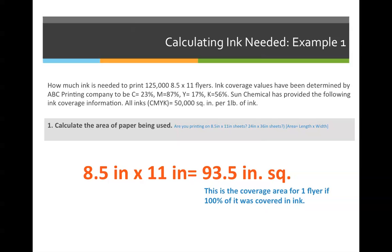So if the problem says how much ink is needed to print 125,000 8.5 x 11 flyers, ink coverage values have been determined by ABC Printing Company to be cyan 23%, magenta 87%, yellow 17%, and black 56%. Sun Chemical has also provided the following ink coverage information: all inks — cyan, magenta, yellow, and black — will cover 50,000 square inches per pound.